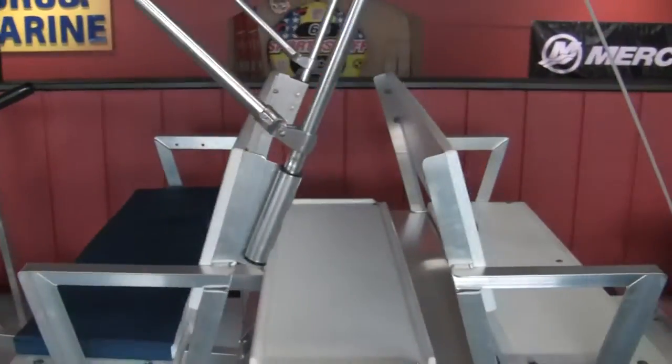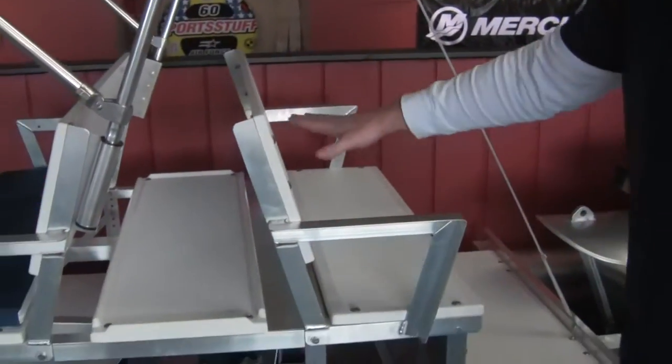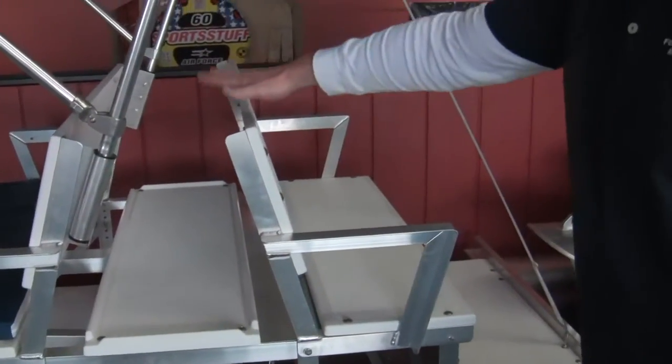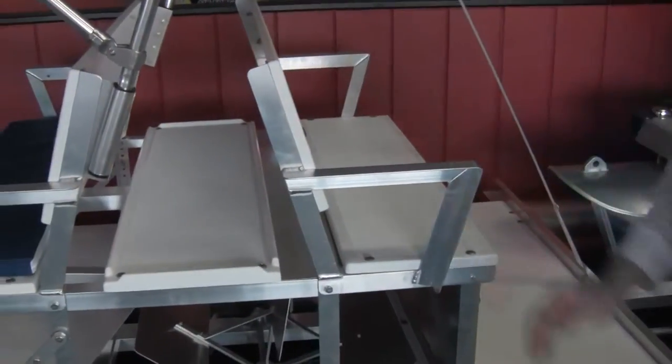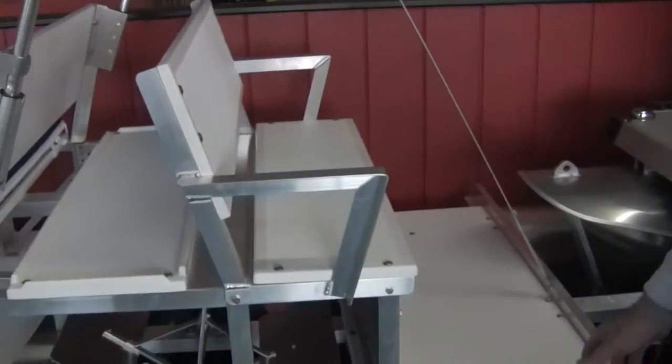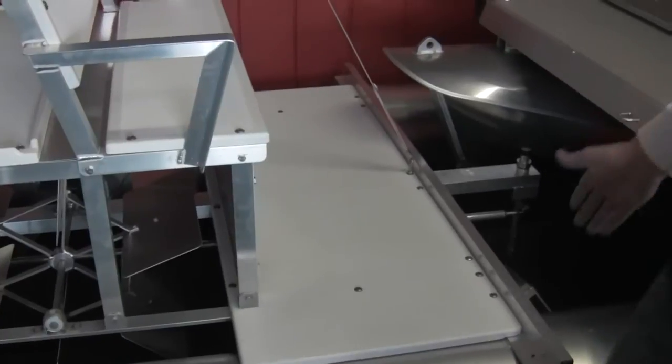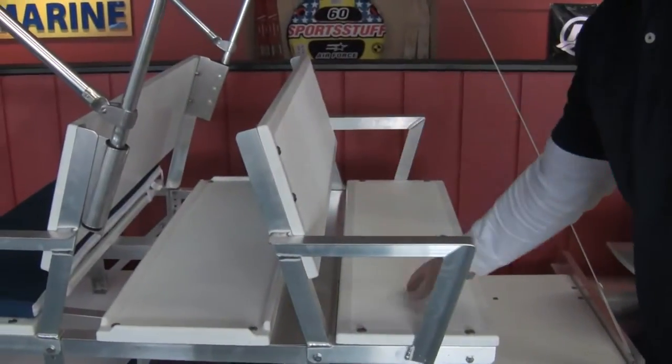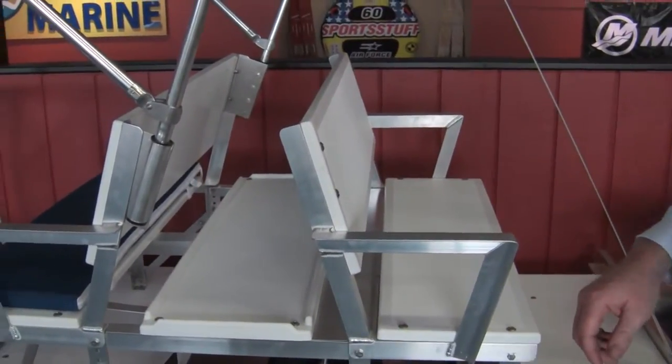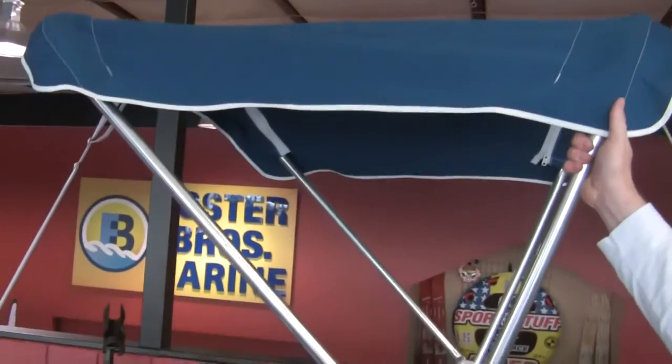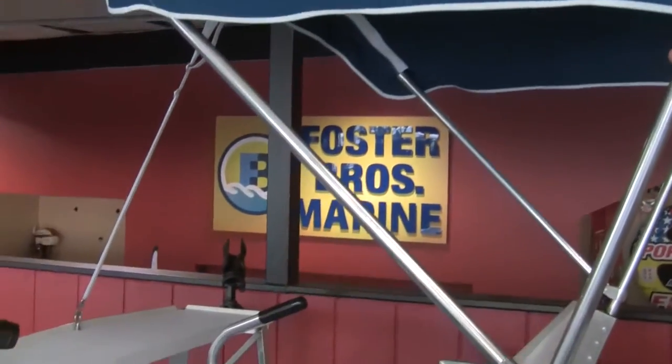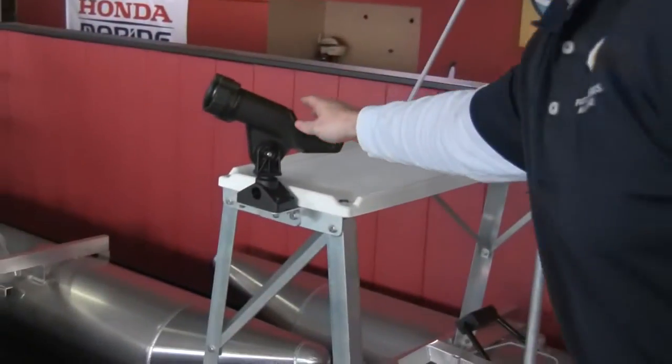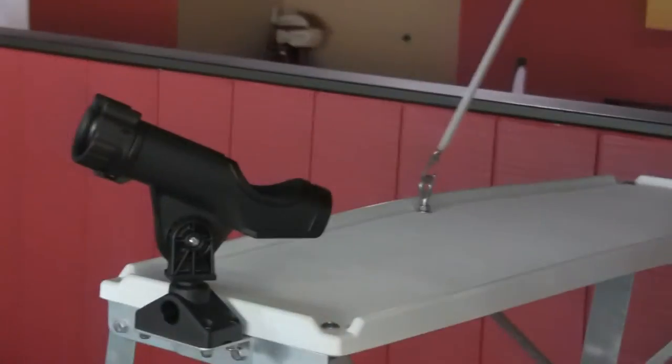And the difference is right here. Instead of the large table you have a rear facing bench seat. You still have the rear platform and the swim ladder but instead you have room for two more people to sit right here. This particular one is equipped with a canopy top and shows the other style of rod holders that we offer.